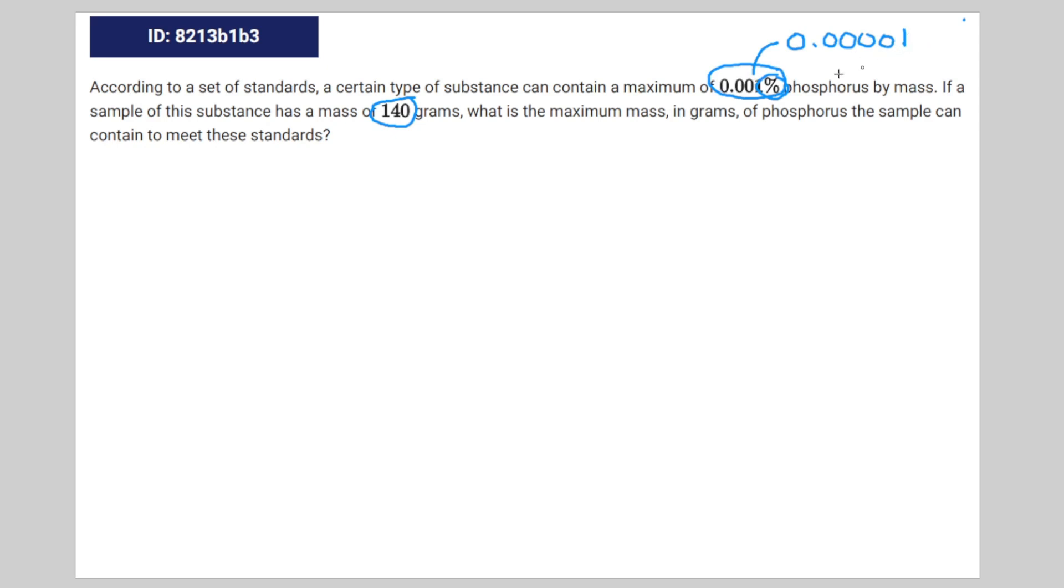That's a pretty big difference if you ask me. So 140 times 0.0001 is equal to 0.0014. And that is the correct answer.